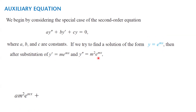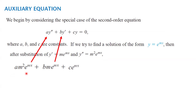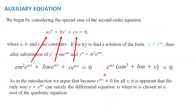Substituting into the differential equation, we get am²e^(mx) + bme^(mx) + ce^(mx) = 0. Factoring out e^(mx) gives (am² + bm + c) = 0. Since e^(mx) is never zero, we can take this quadratic equation and set it equal to zero.